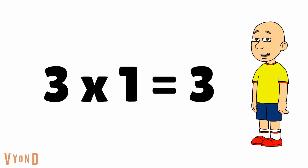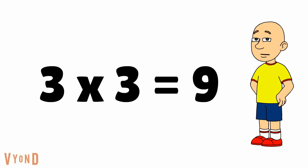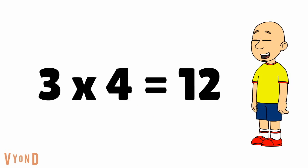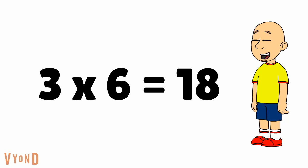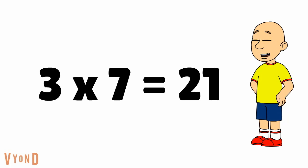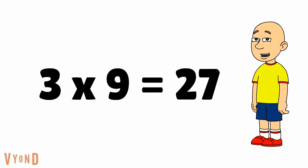Here we go. 3 times 1 equals 3. 3 times 2 equals 6. 3 times 3 equals 9. 3 times 4 equals 12. 3 times 5 equals 15. 3 times 6 equals 18. 3 times 7 equals 21. 3 times 8 equals 24. 3 times 9 equals 27.